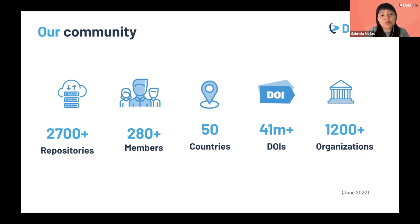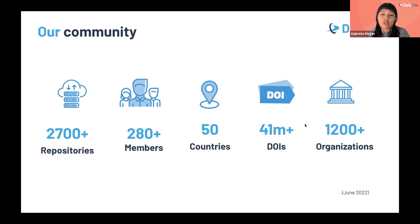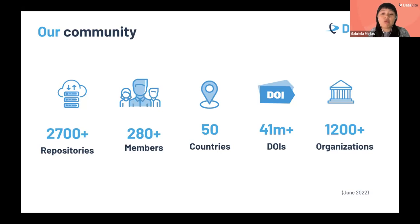Consortia are groups of organizations that come together to take a wider approach to adoption of our infrastructure. Overall, more than 1,200 organizations have connected their repositories into our registry. To date, we have more than 41 million DOIs registered by our community.